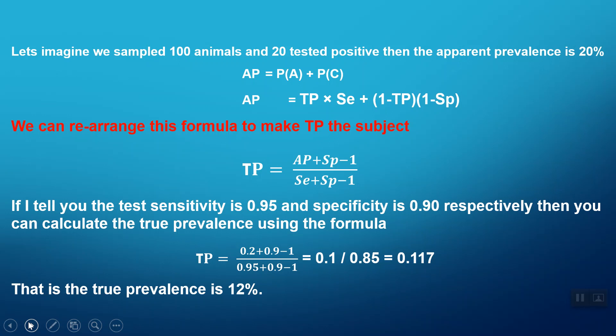The true prevalence is going to be 0.1 divided by 0.85, which equals 0.117, and I've rounded that to 12%. That is, the true prevalence is 12%.